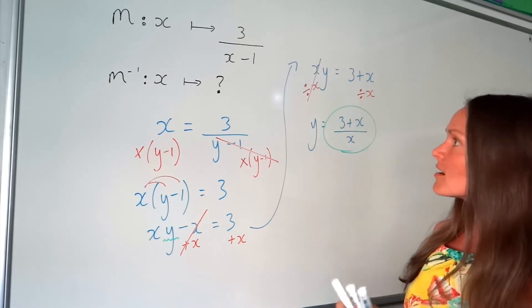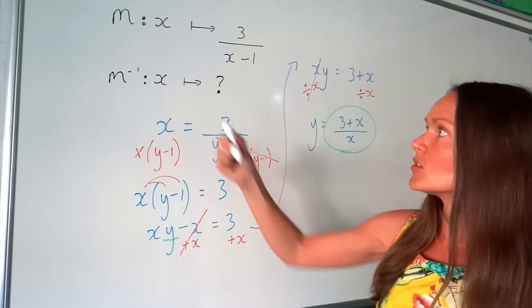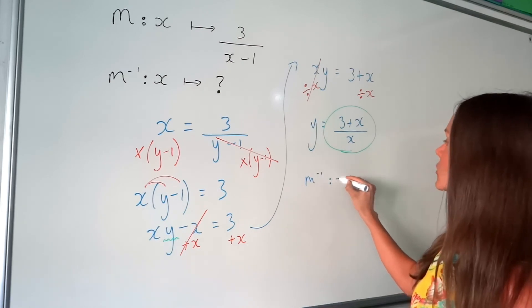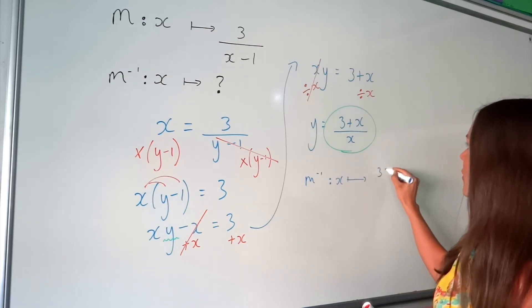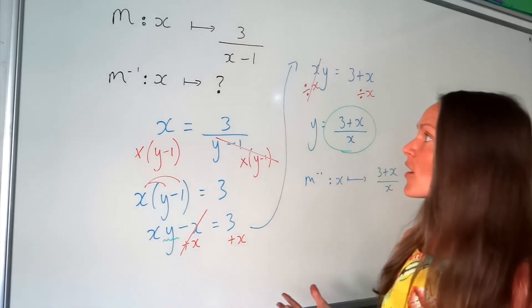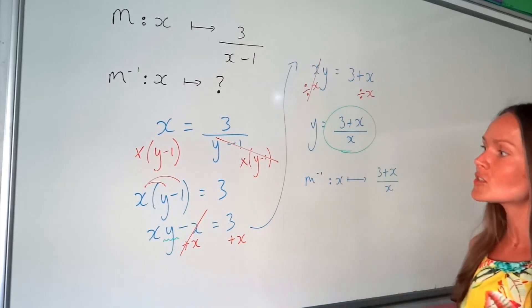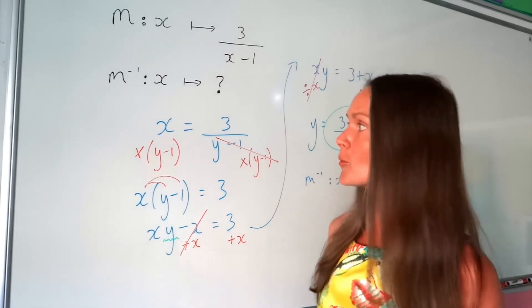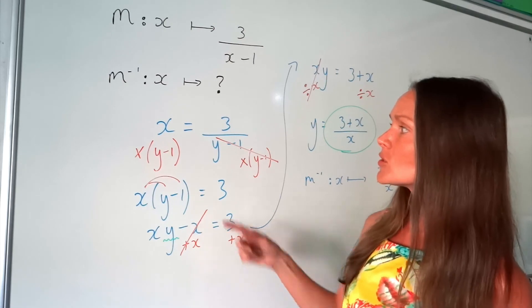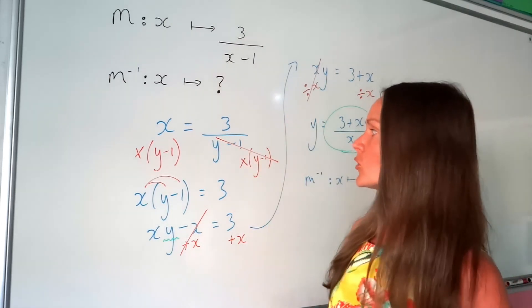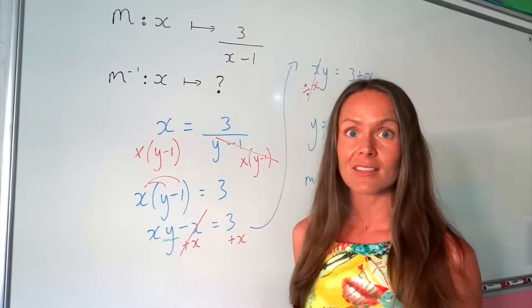So when asked to work out the inverse of the function m of x, you just need to write it like that. So there's finding the inverse of functions. As you can see, it's just changing the subject of a formula. As long as you remember to write down x equals, change the other letter to a y, you're just rearranging to make y the subject of the formula.